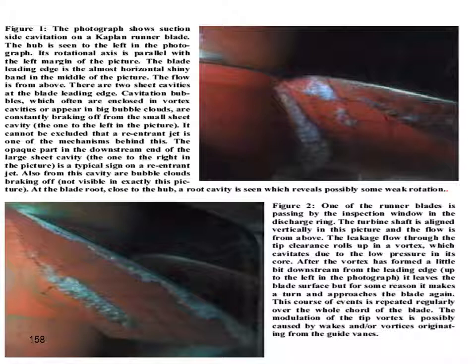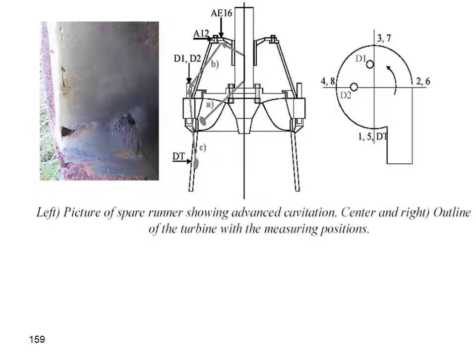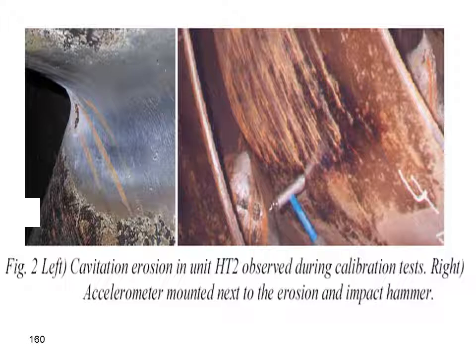We can see damage on the blades, corrosion, wear, and cavitation erosion inside the turbine body and on the runner blades.